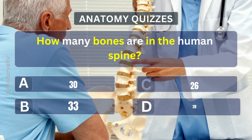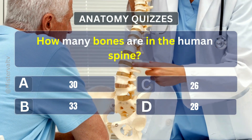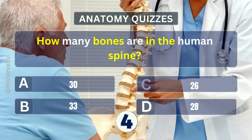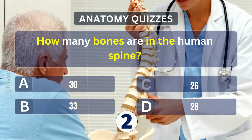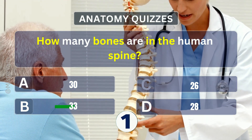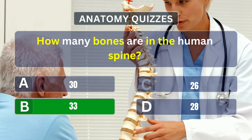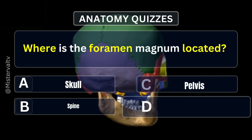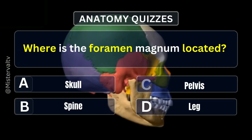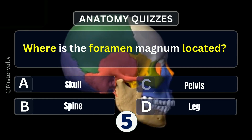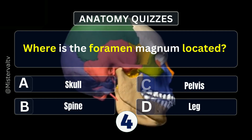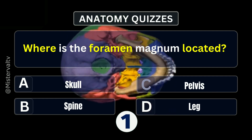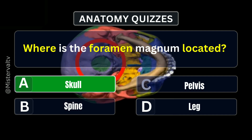How many bones are in the human spine? Answer. B. 33. Where is the foramen magnum located? Answer. A. Skull.